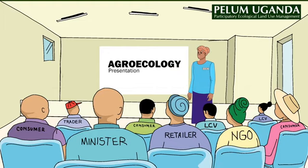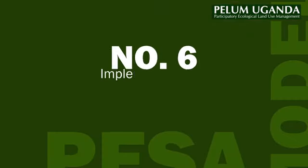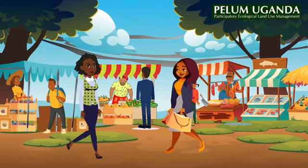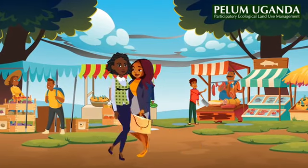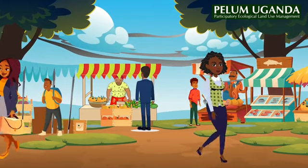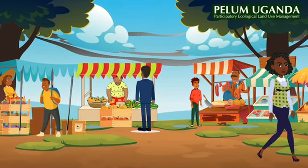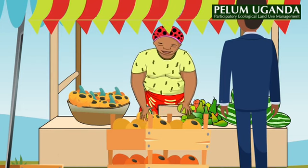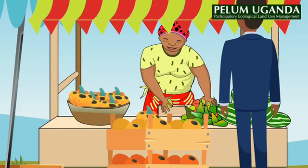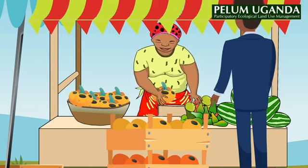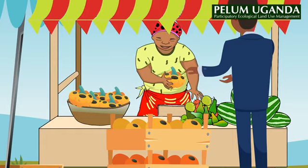And finally, number six: implementation of the business. A business plan is nothing to a farmer if not adequately implemented. So module six of the PESA model leads farmers in the implementation of the business plan and how to practically close deals, access financial services, and observe and obtain market standards and launching the business.